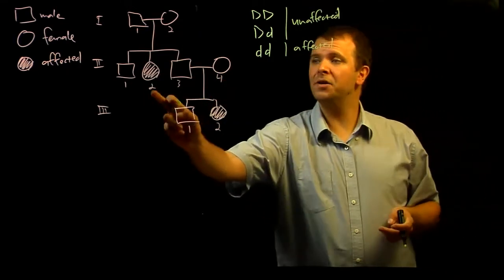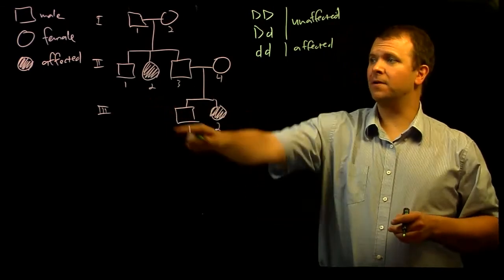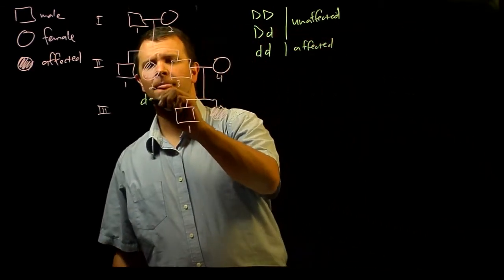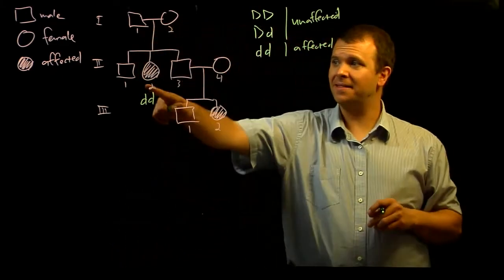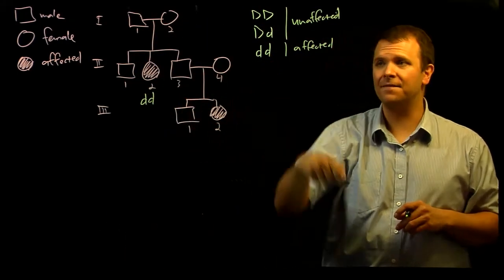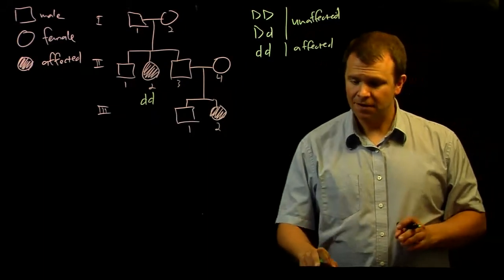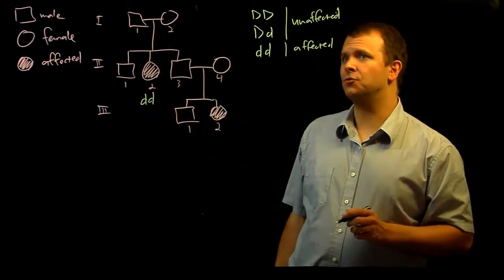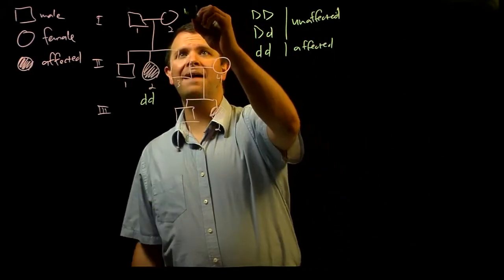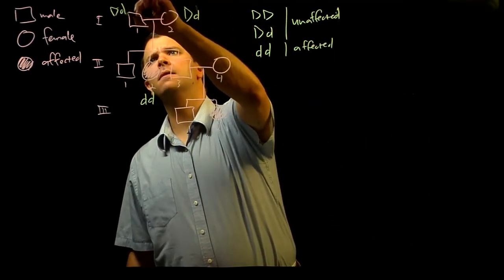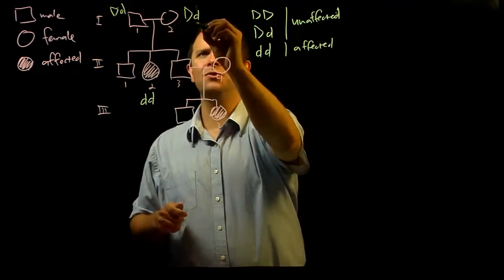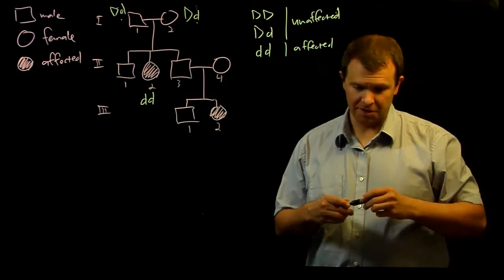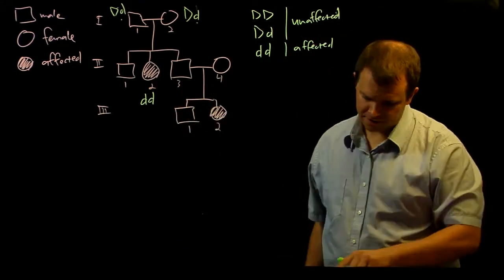And if we return to the same three individuals for this pedigree, now we know that the genotype for individual generation 2, individual 2 here is little d, little d, right? They were affected. They had to have the homozygous recessive genotype, and these two individuals could have been heterozygotes both, and they both could have contributed that little d allele to this offspring.